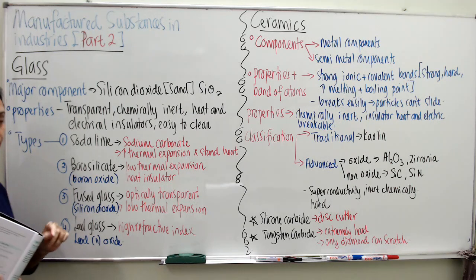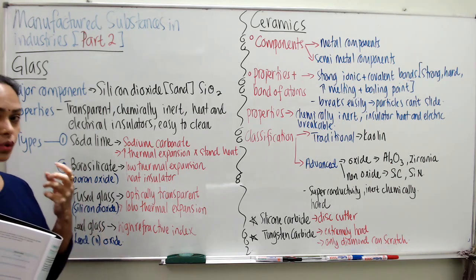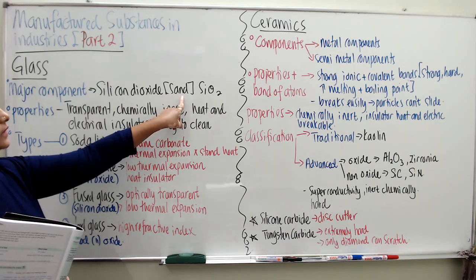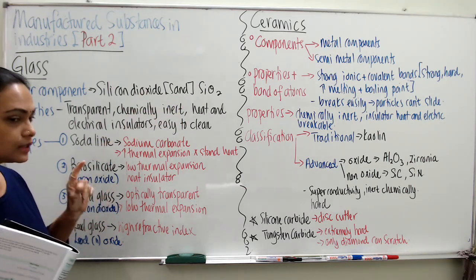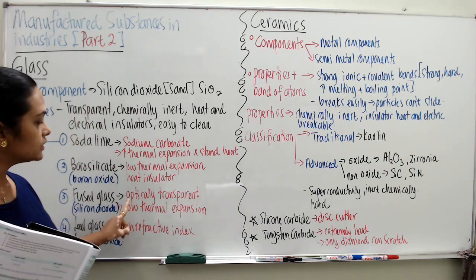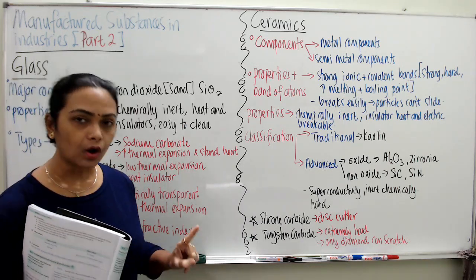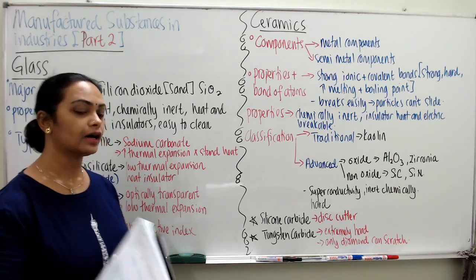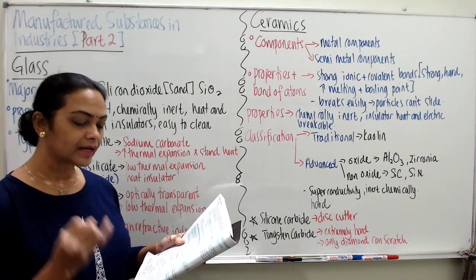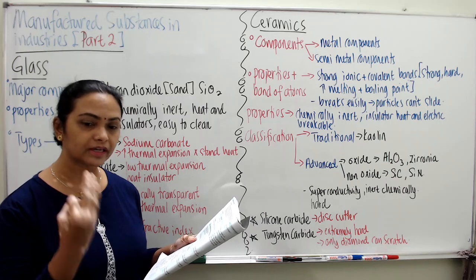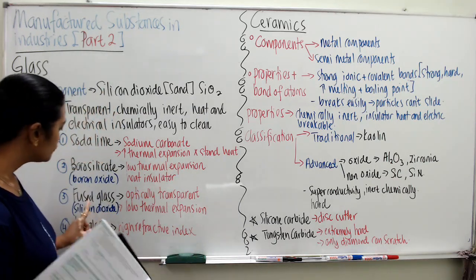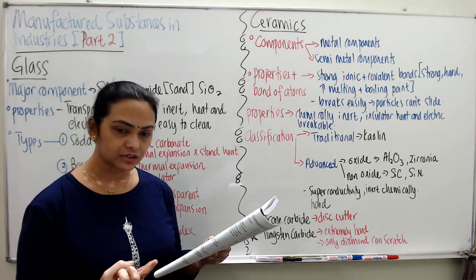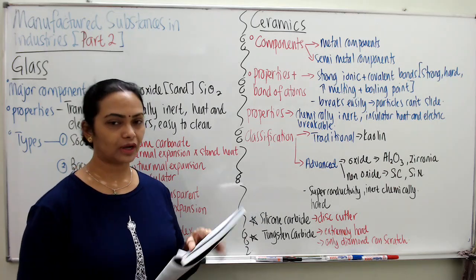Now let's go to fused glass. Fused glass is actually pure glass — its main ingredient is silicon dioxide. The key characteristic of fused glass is that it is optically transparent. Please note the word 'optical' — this means it is used as laboratory glassware, lenses, telescope mirrors, and optical fibers.